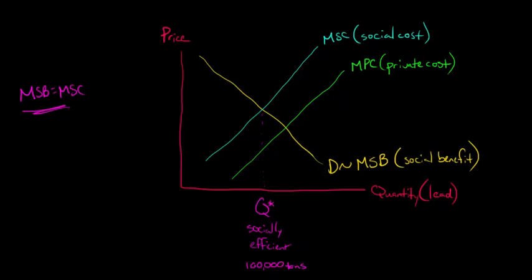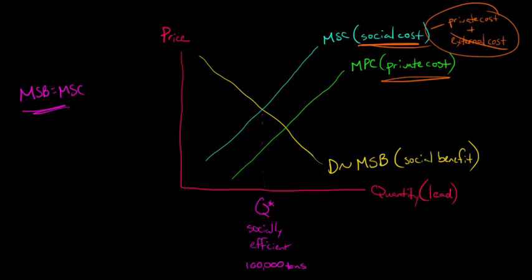And so their marginal private cost is lower than the social cost. And the reason is, is that the social cost includes two things. So it includes the private cost, the cost to the lead smelting company, plus what's called the external cost. That's the cost to other people in society aside from the smelting company. But the marginal private cost does not include the external cost.